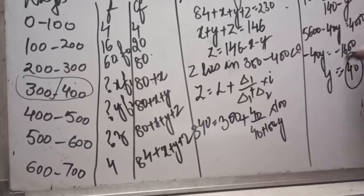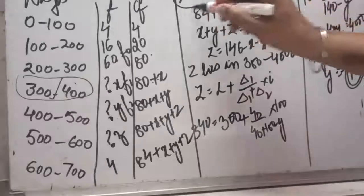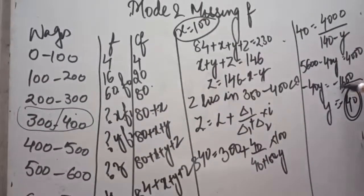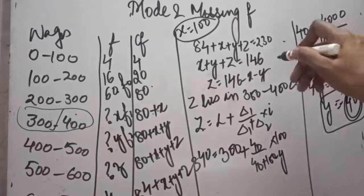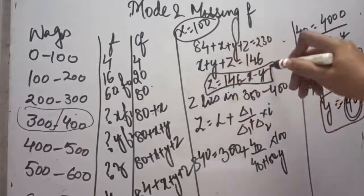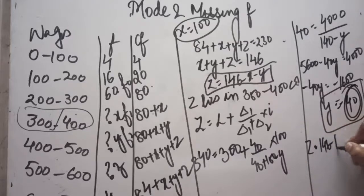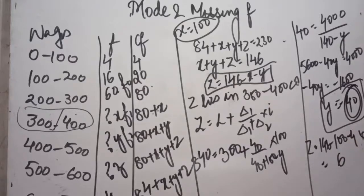We have calculated x equals 100 and y equals 40. Applying these in our first equation: z equals 146 minus 100 minus 40, so z equals 6. This is how the missing frequency values are calculated with the help of median and mode.